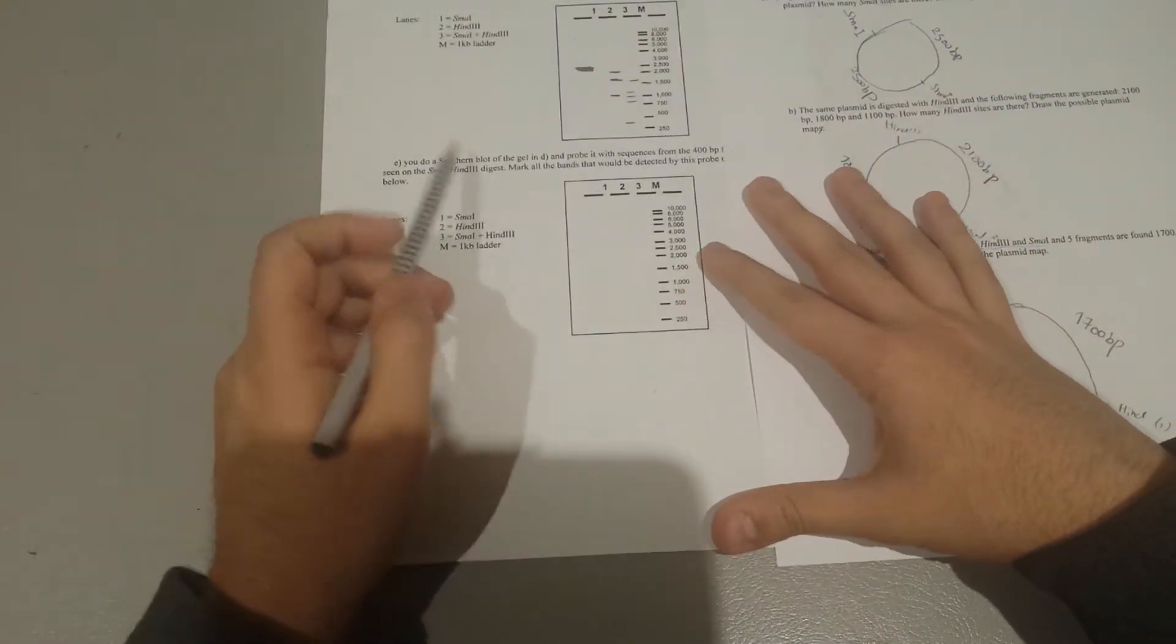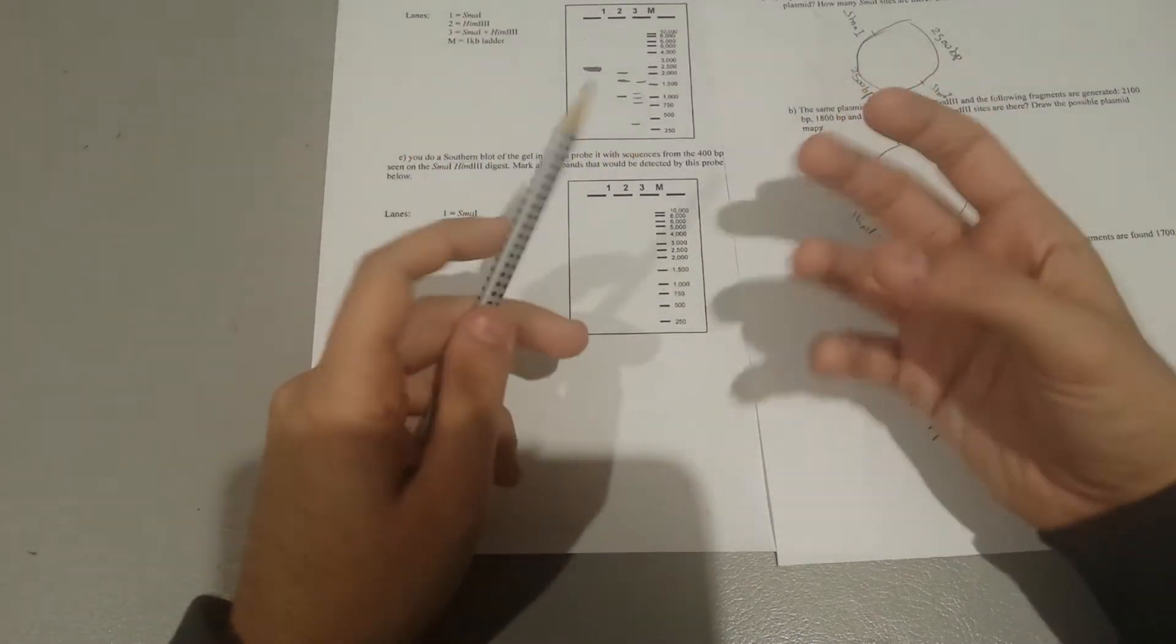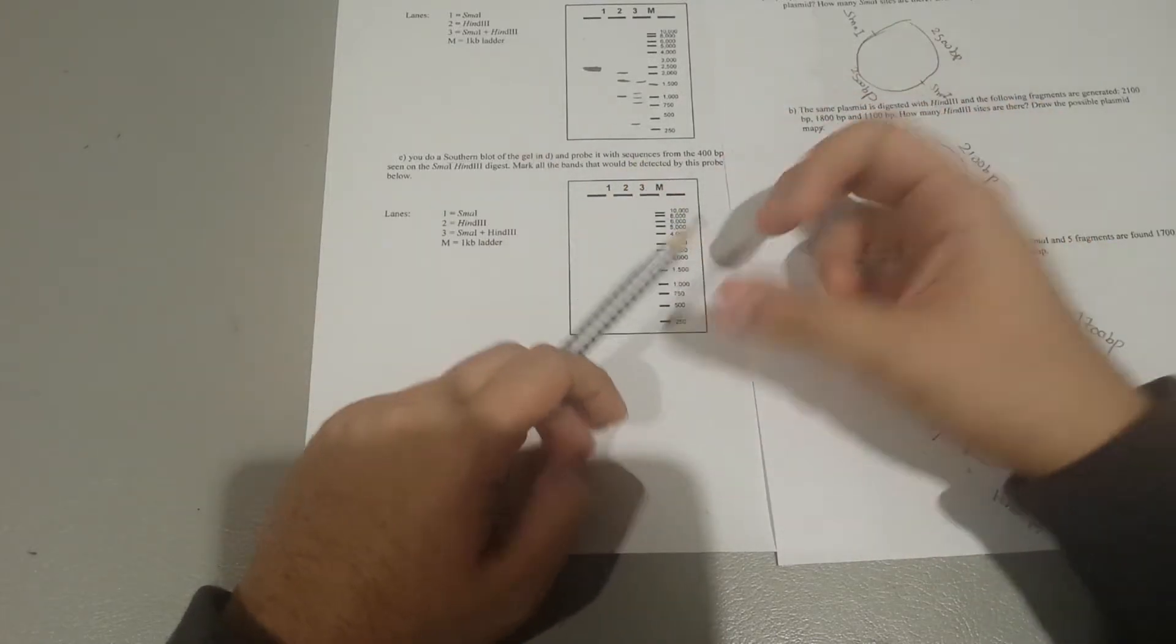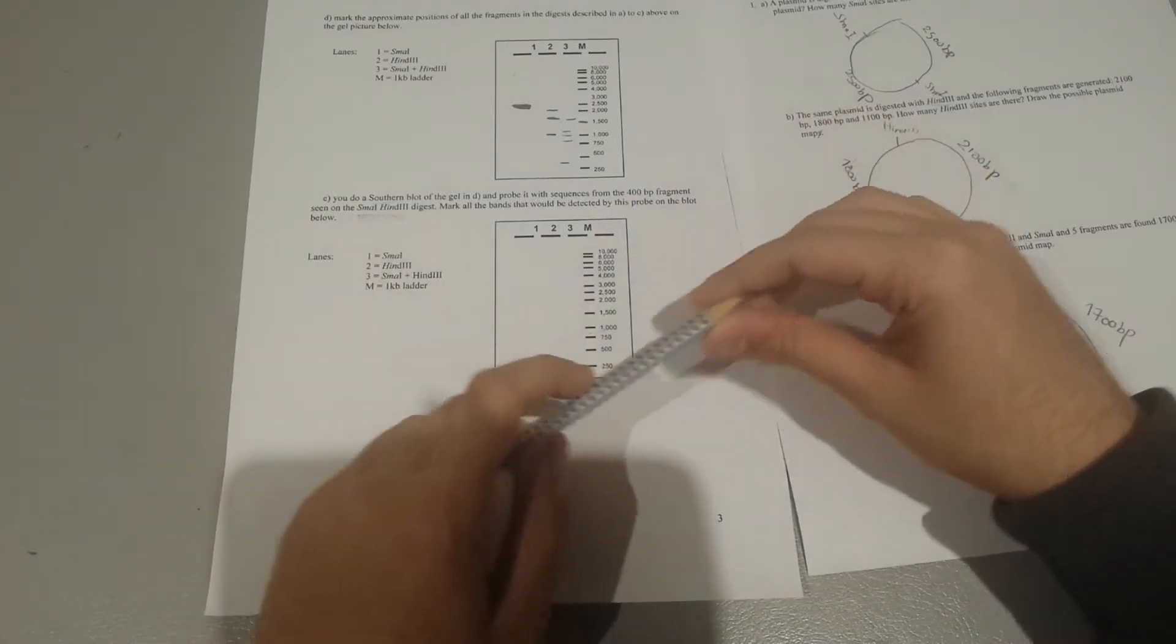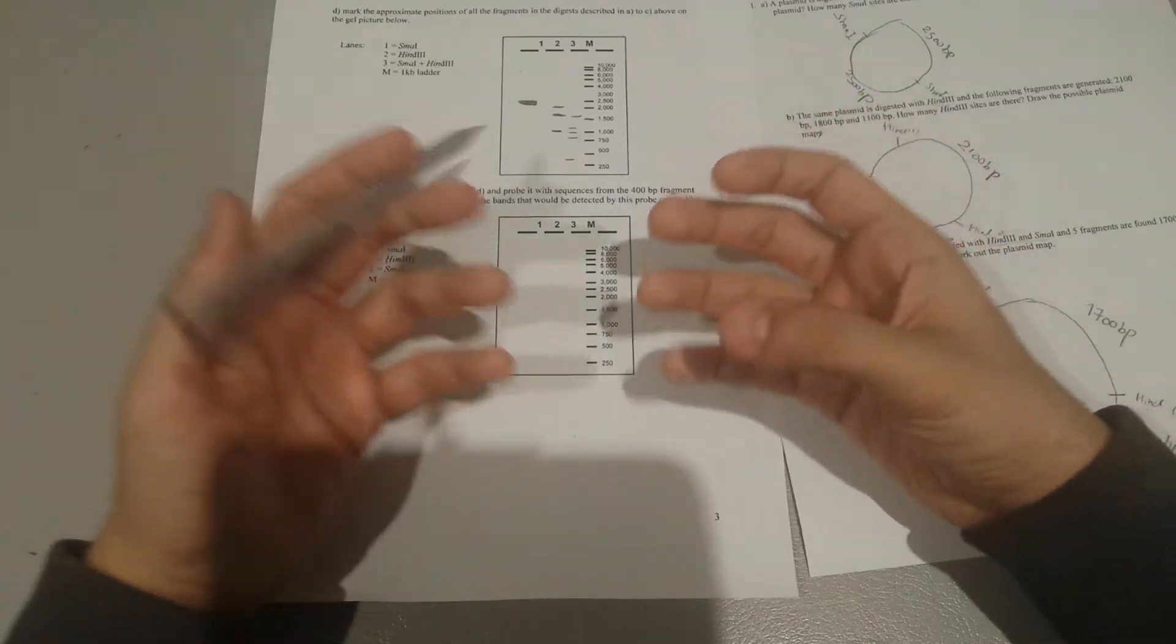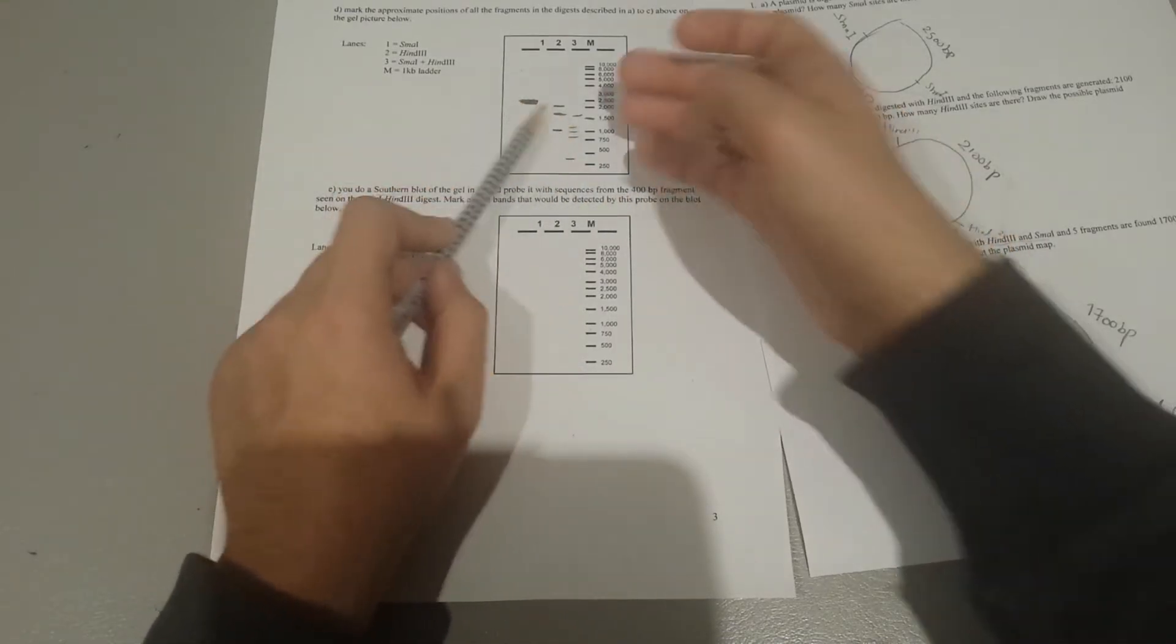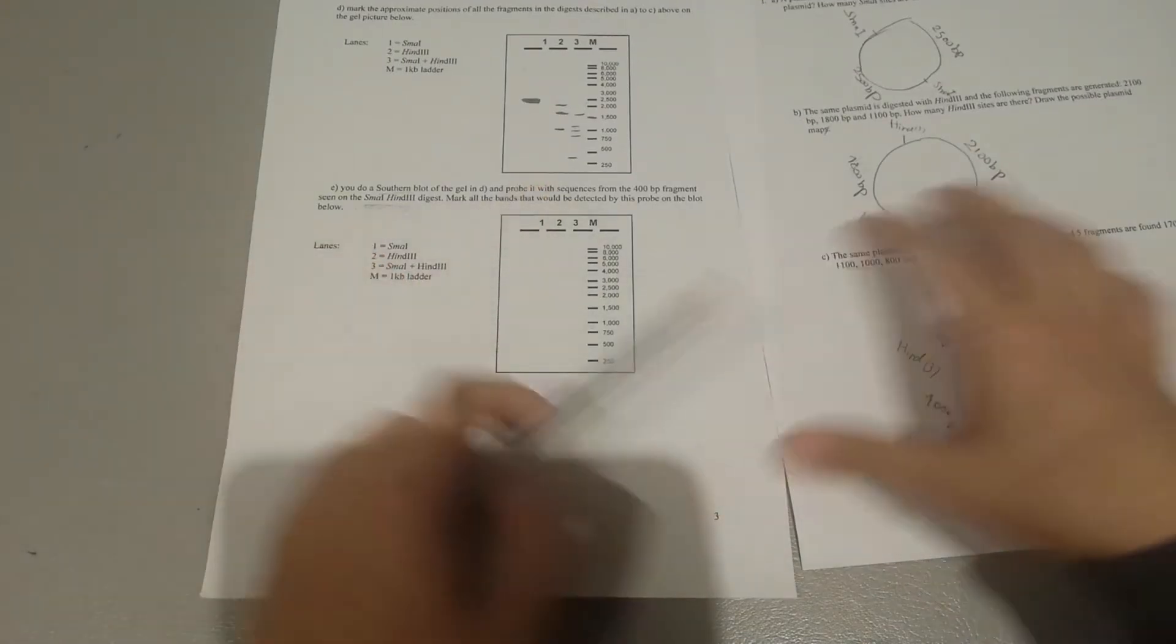But the next question is very interesting because it's asking you to do the Southern blot, which is assigning a specific probe that would bind to the fragments of your match, your desired match. In this case it's 400 base pairs. In this digest it's asking you to match it because the probe is usually radioactive isotope labeling, so once that's done you can easily tag that base pairs in this gel and easily identify it.